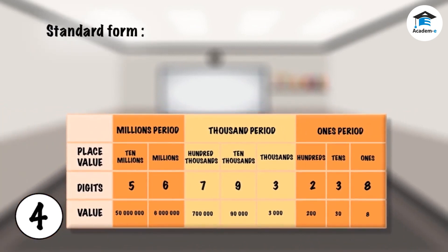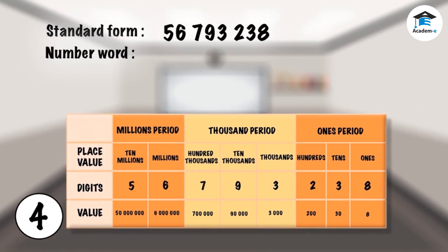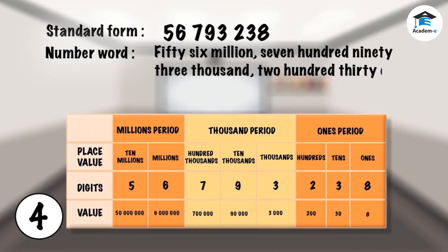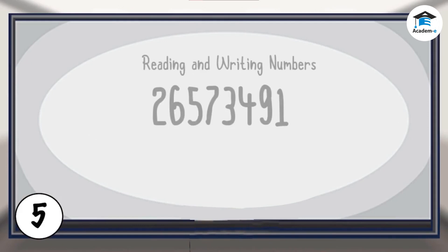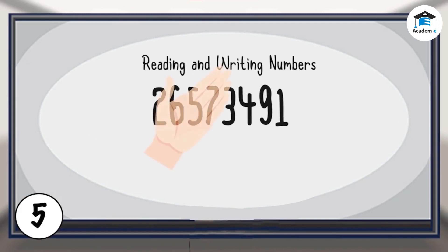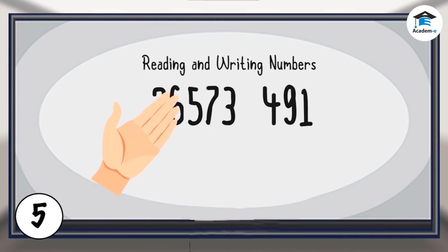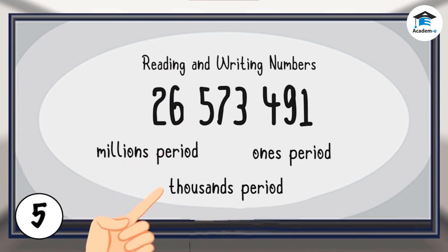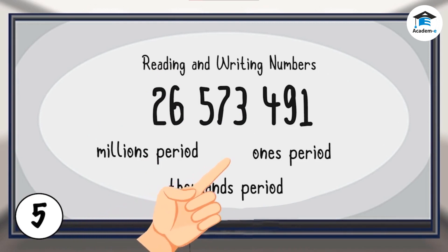The place value chart can help us read. Things to remember in writing and reading numbers: numbers are written and read in groups of three digits, starting from the right. Each group of up to three digits is called a period. Periods are separated by spaces. Starting from the left, read the numbers by periods, followed by the name of each period.